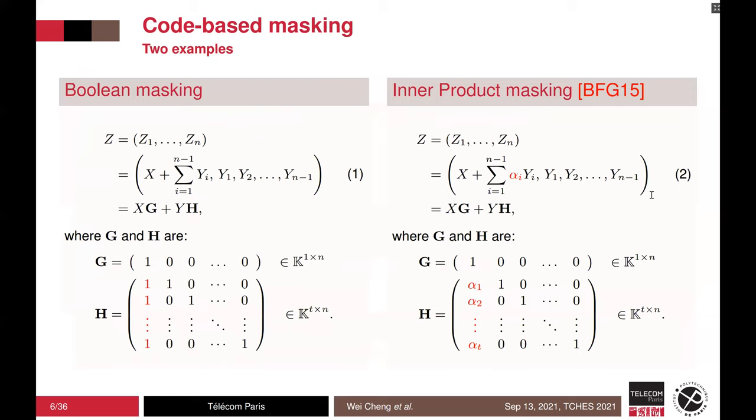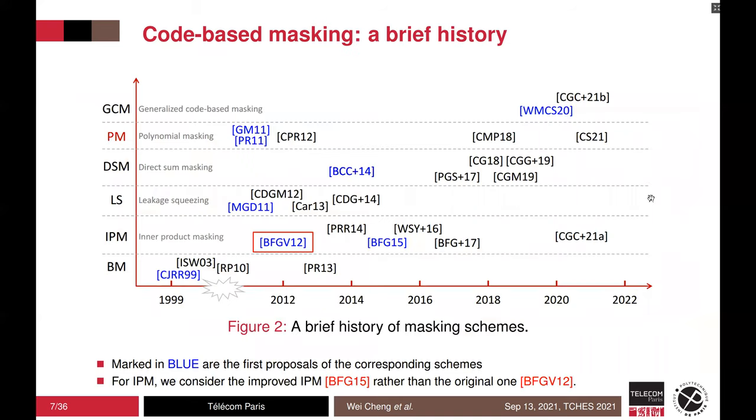Here we give two examples, the Boolean masking and the inner-product masking. On the left, the Boolean masking is the simplest encoding with only XOR. The G and H are binary matrices with only 1s and 0s. On the right, in IPM, the first share is constructed with the inner-product operation involving αᵢ. αᵢ are in the first column of H. Comparing with the Boolean masking, only one column is changed. We can recover the Boolean one by setting αᵢ equal to 1. So, the Boolean masking is a special case of IPM.